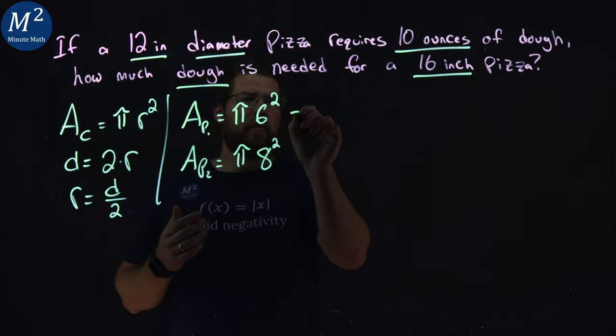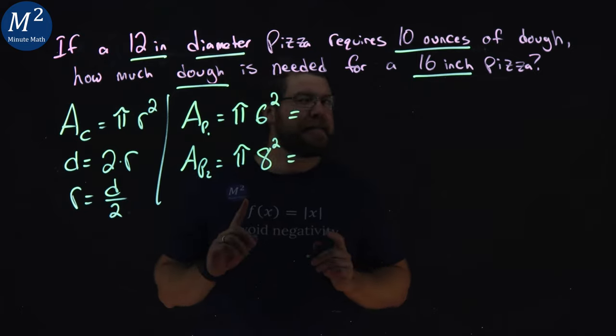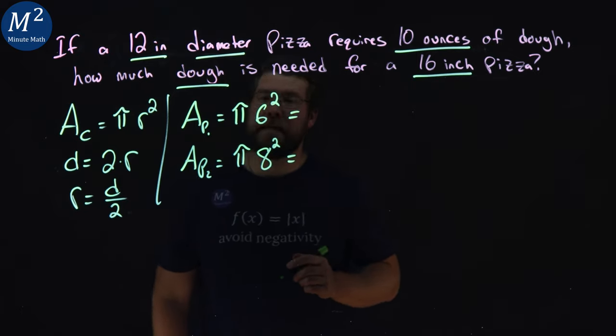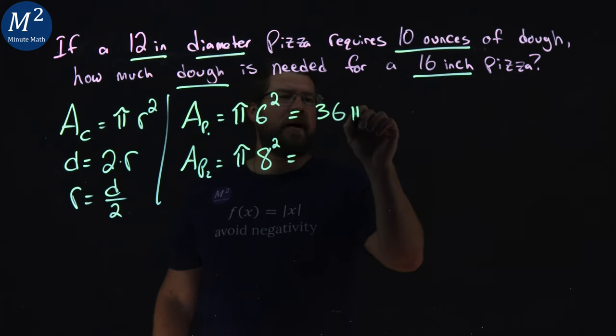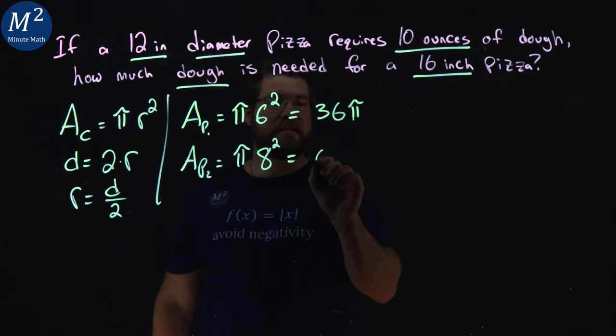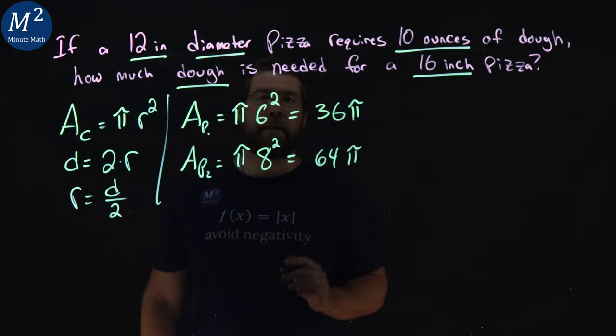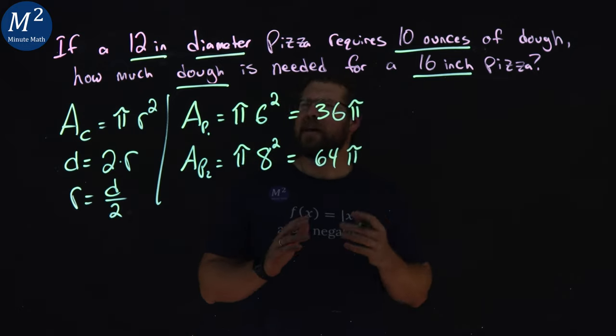Now, from here, we kind of can multiply that out. I'm going to leave the pies in. No pizza pun intended. We have a 36, 6 squared is 36 pi, and 8 squared is a 64 pi. You'll see why in a minute. They kind of will cancel out here.